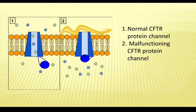When the CFTR protein is working correctly, ions freely flow in and out of the cells. However, when the CFTR protein is malfunctioning, these ions cannot flow out of the cell due to a blocked channel, causing cystic fibrosis characterized by the buildup of thick mucus. The first image shows the normal CFTR protein channel where ions can freely move in and out of the cell. The second image shows the malfunctioning CFTR protein channel where ions cannot move due to a blocked channel, causing a thick mucus layer.